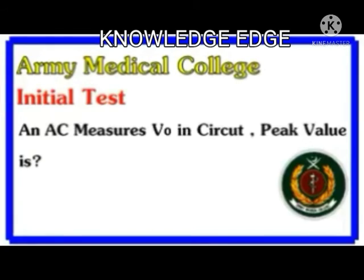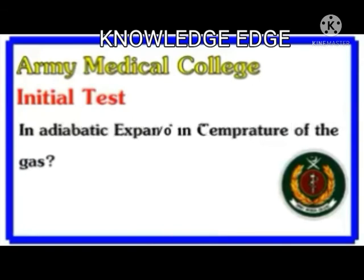In a circuit, the peak value is: peak value equals root 2 times V-naught. In adiabatic expansion, the temperature of the gas decreases.